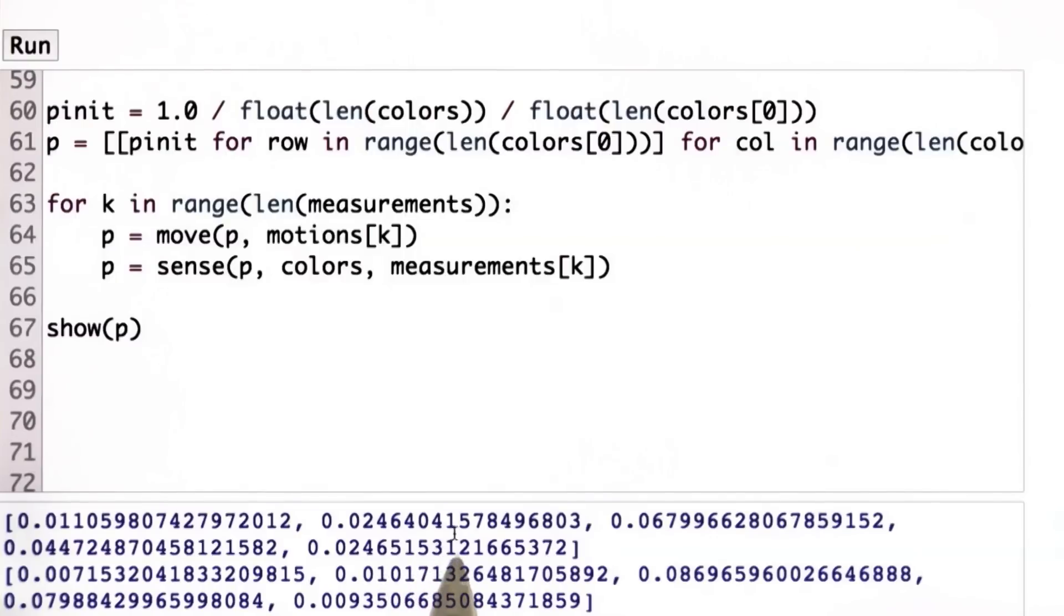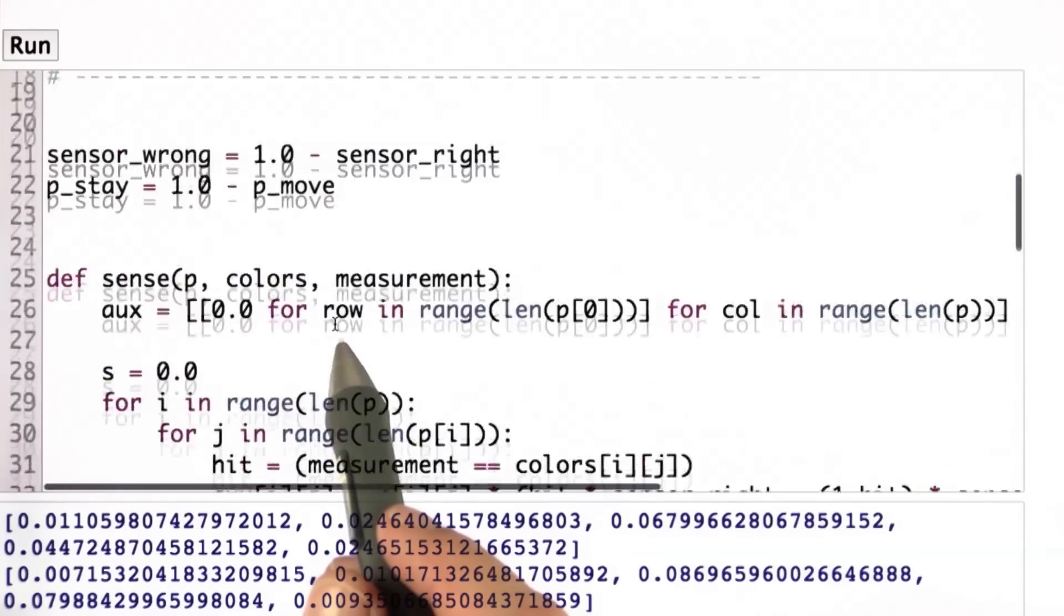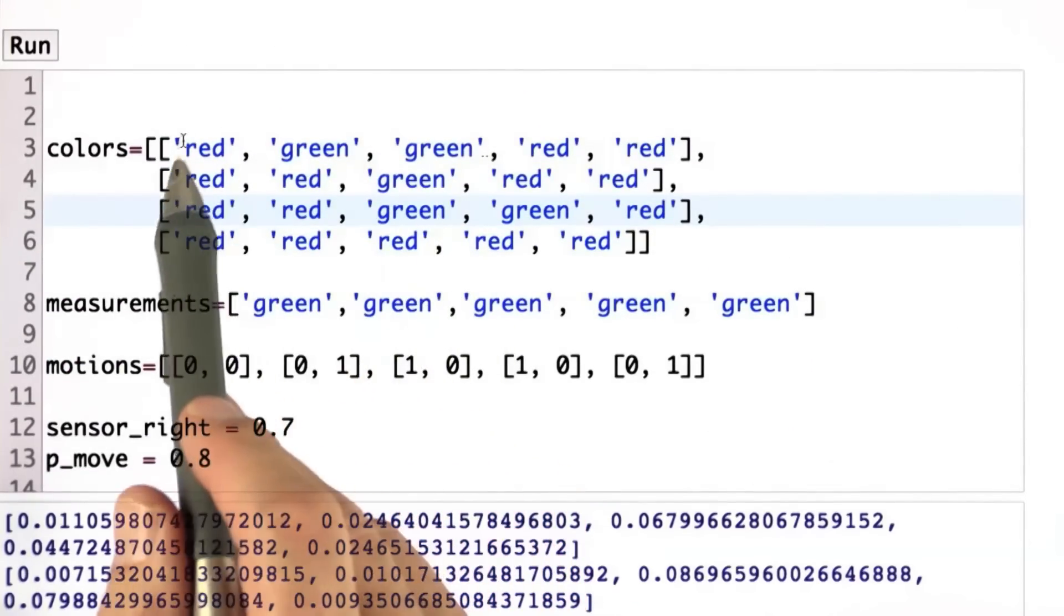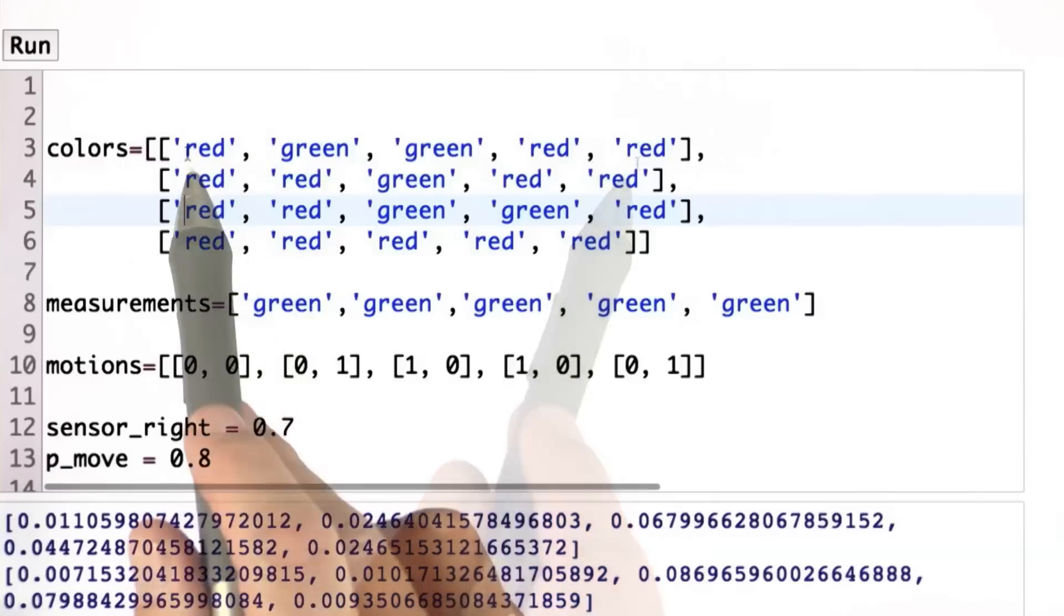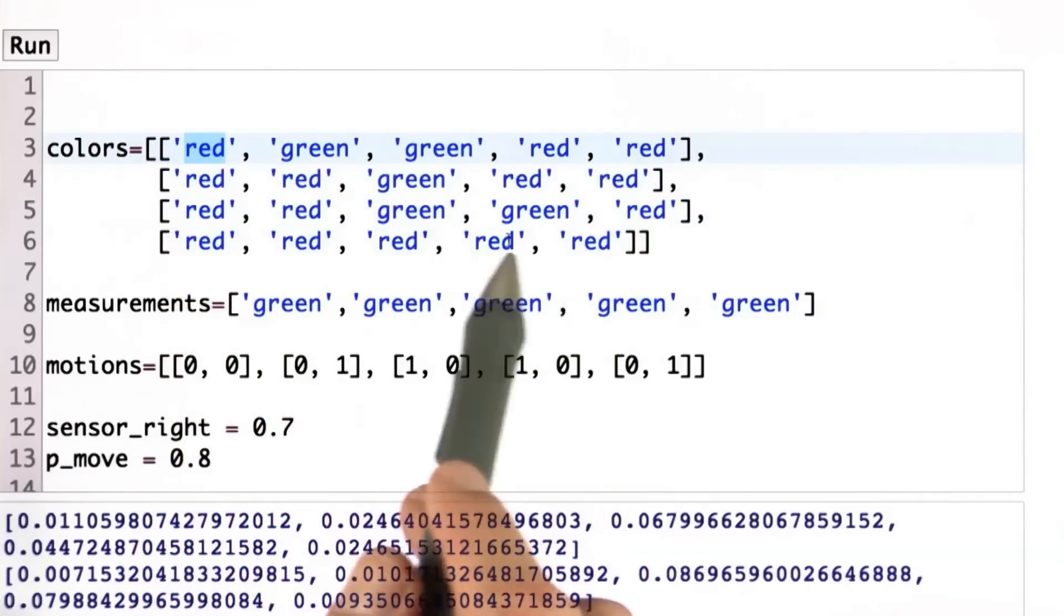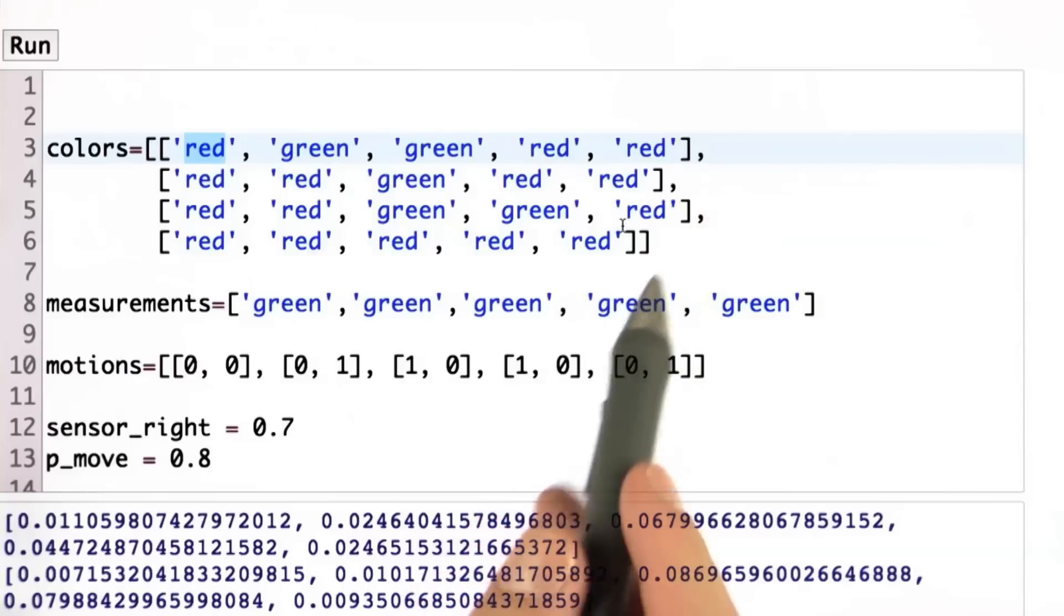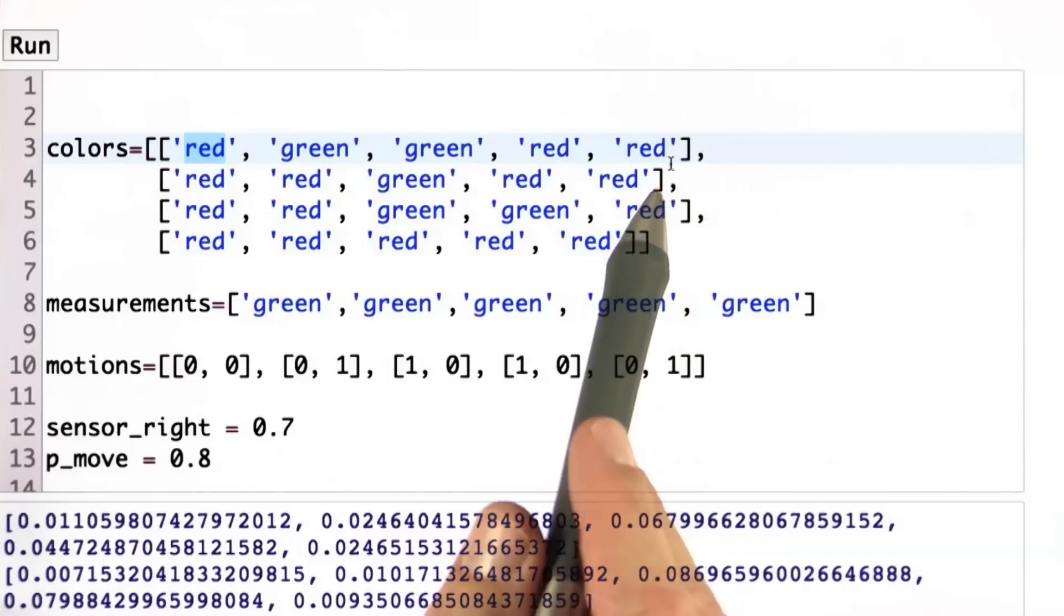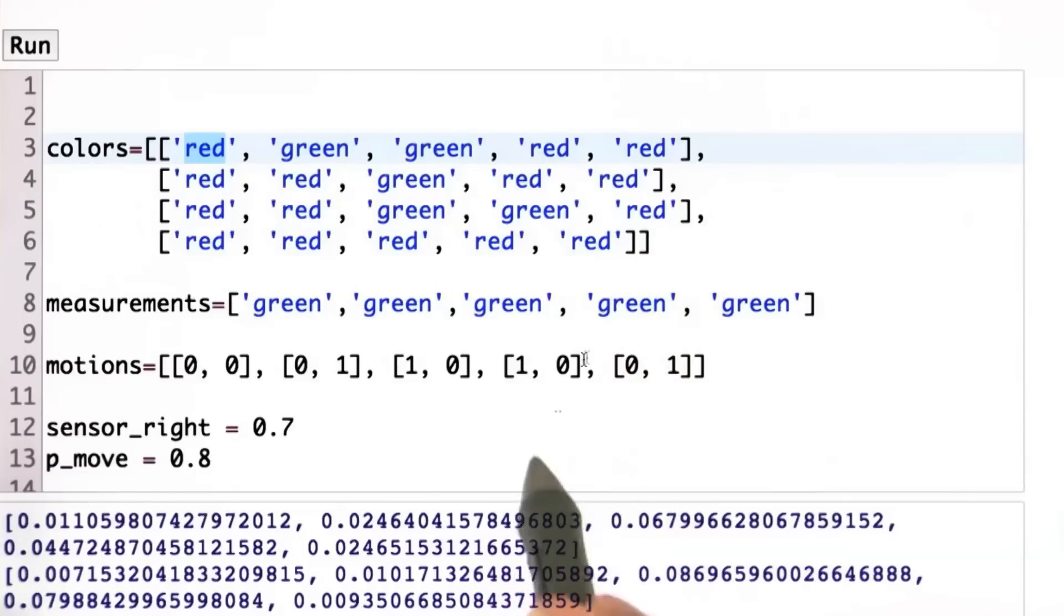If you got this correct, then you've done something quite amazing. You've programmed the core of Google self-driving car localization methods. In Google's case, the world isn't as simple as just red and green. In Google's case, these are carefully assembled 2D surface models of the world's surface. But that doesn't affect what we've programmed here. It makes the measurement function slightly more involved. The fact is that the thing we've programmed here captures the key of the probabilistic inference necessary to localize the Google car.